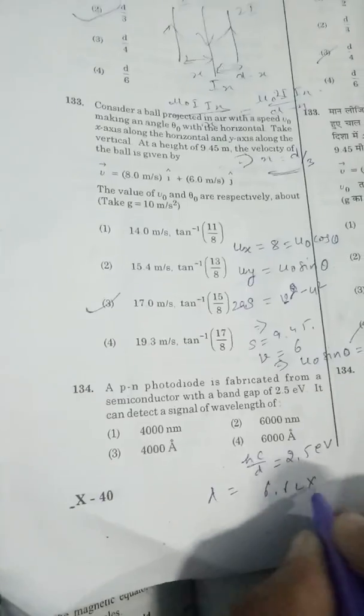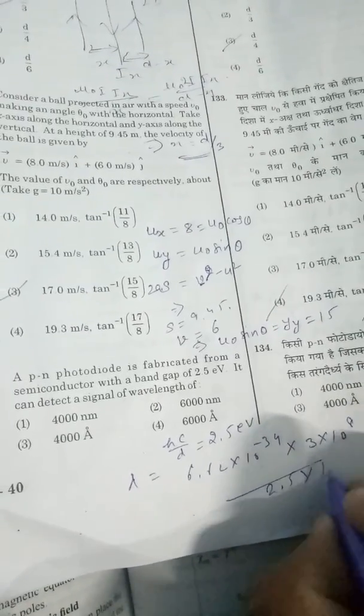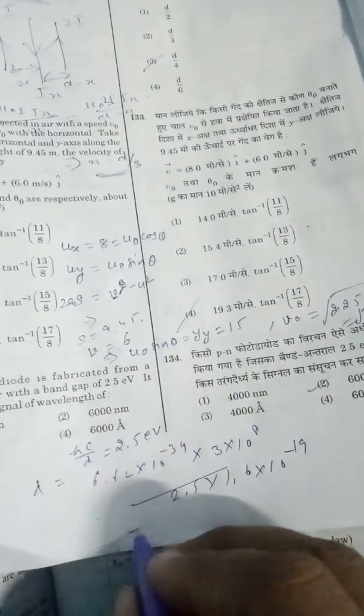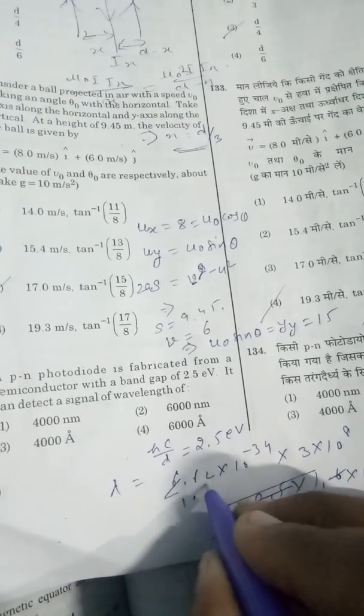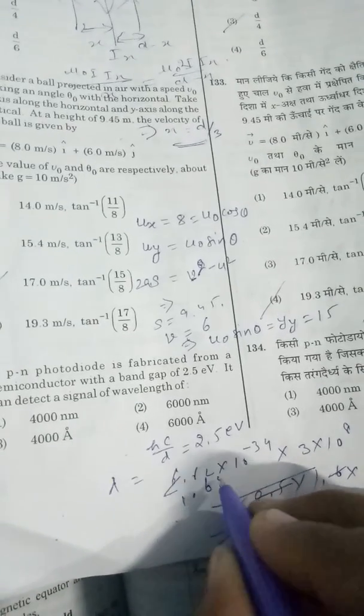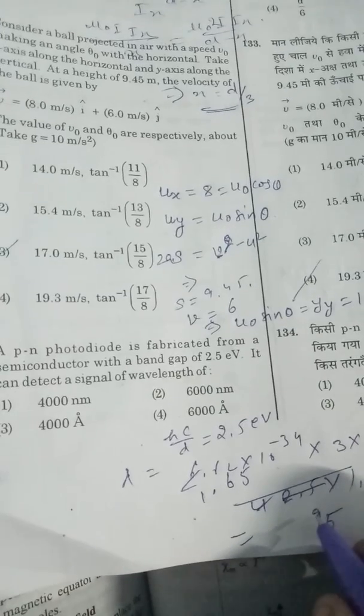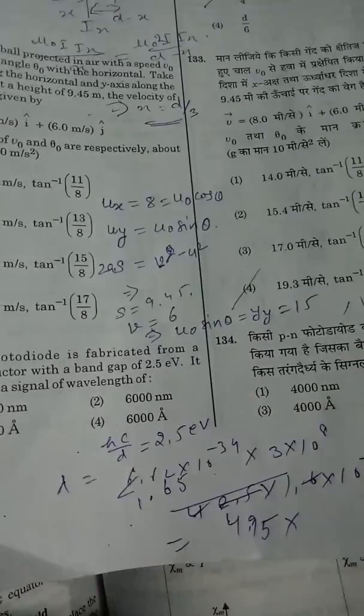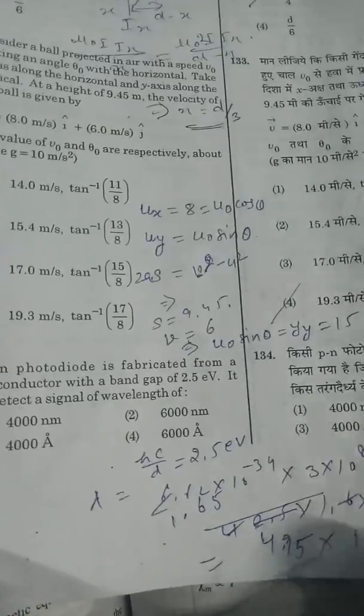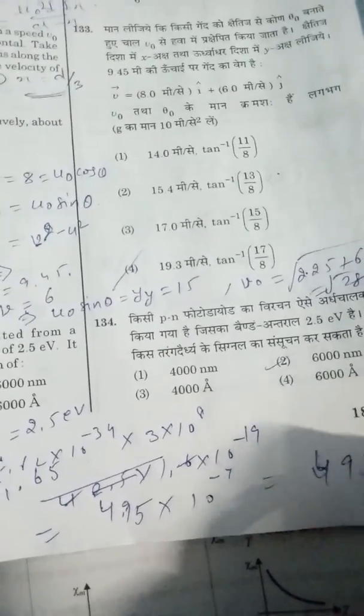That's 6.62 × 10^-34 times 3 × 10^8 divided by 2.5 into electron volt value 1.6 × 10^-19. On solving this calculation, we get 4.95 × 10^-7, which is 495 nanometers. So the correct option in scientific notation is 4.95 × 10^-7 meters.